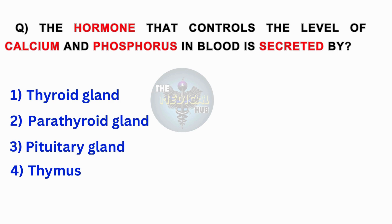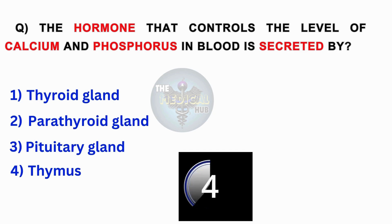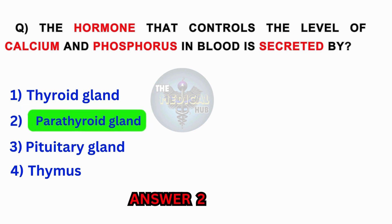The hormone that controls the level of calcium and phosphorus in blood is secreted by? Thyroid gland, parathyroid gland, pituitary gland, thymus. Answer 2: Parathyroid gland.